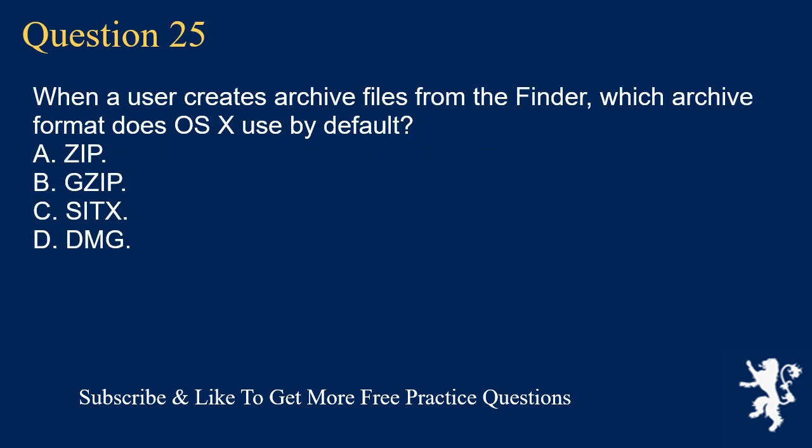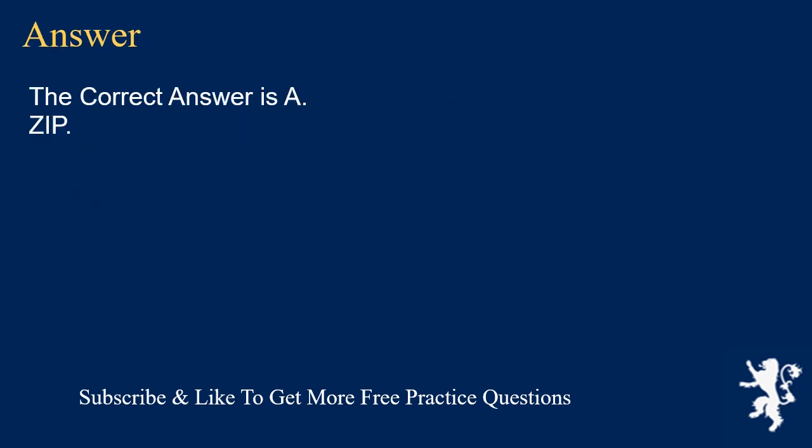Question 25. When a user creates archive files from the Finder, which archive format does OSX use by default? A. ZIP. B. ZIP. C. Seach. D. DMG. The correct answer is A: ZIP.